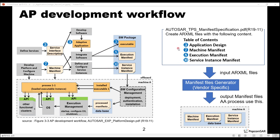After designing all four parts, the developer can get the ARXML files and then needs to input them to the Manifest Files Generator. Finally, after the generation, three kinds of manifest files — Machine Manifest, Execution Manifest, and Service Instance Manifest — will be loaded into the ECU. The only OS regulation in adaptive platform is to use POSIX OS, such as Linux.